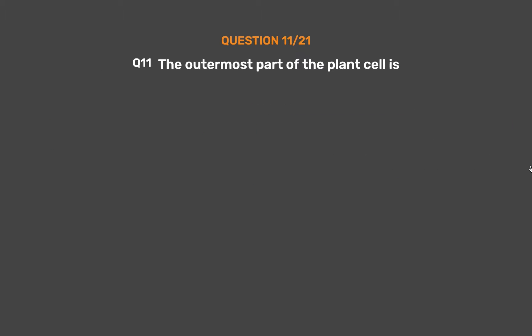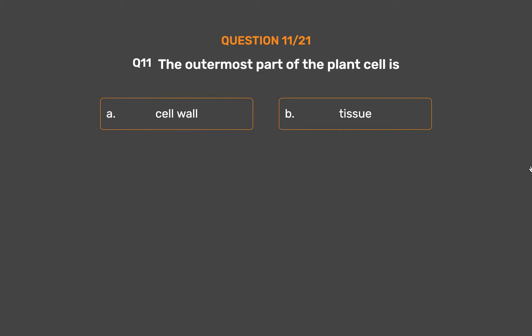Question No. 11: The outermost part of the plant cell is. Option A: Cell wall. Option B: Tissue. Option C: Cell membrane. Option D: Vacuoles.